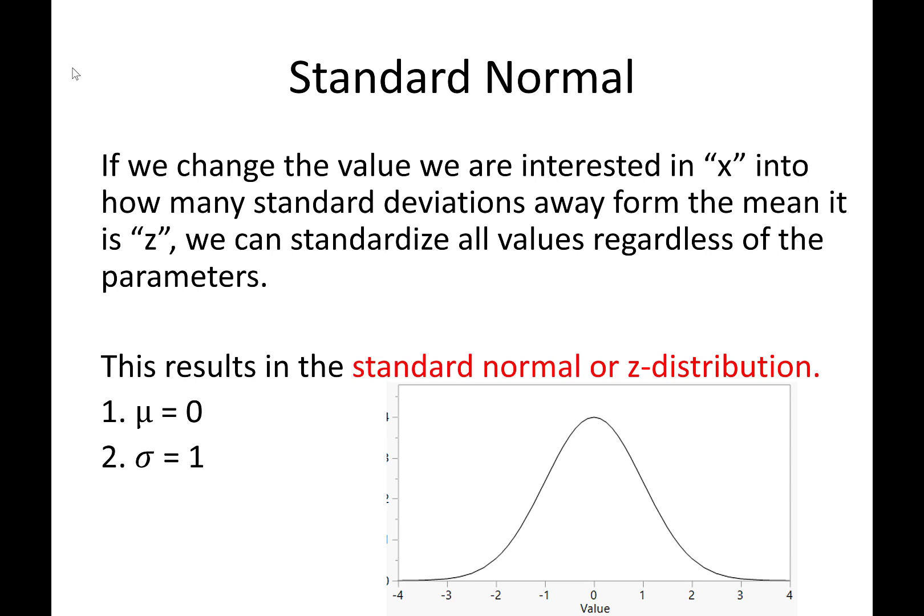So let's check out an example using this. The standard normal distribution or the z-distribution always has a mean of zero and a standard deviation of one. That signifies that you're in this standard normal or z-distribution. So let's check out an example to see what I mean by this.